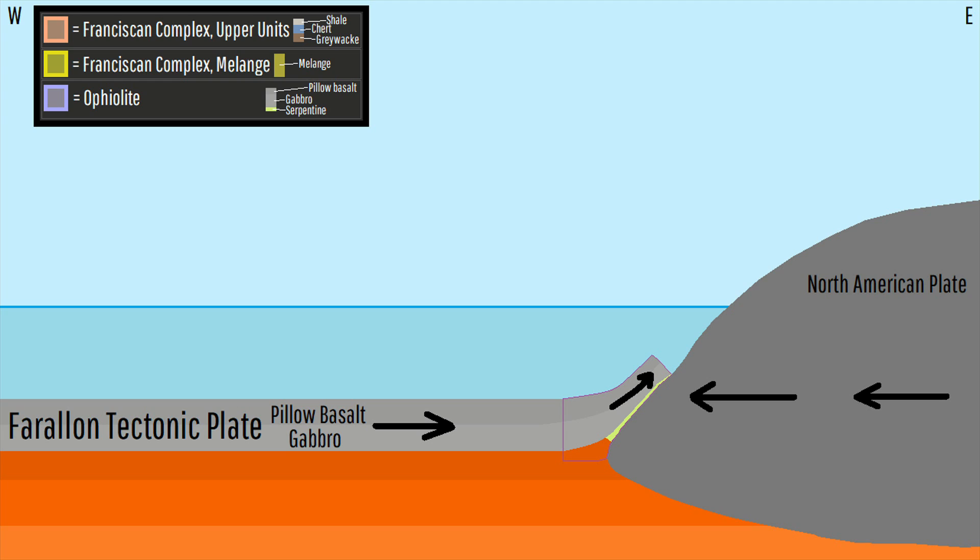This led to a portion of mantle rock and the Farallon plate overlying continental crust which, due to hydrating, heating, and compressing the rock, led to the creation of beautiful serpentine mineralization.